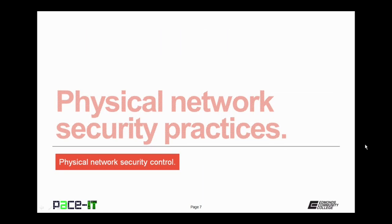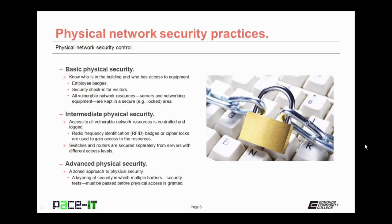With the why of physical network security out of the way, let's move on to physical network security practices. Basic physical security should include knowing who's in the building and who has access to equipment — you can do that through employee badges. Security check-in should be implemented for all visitors, and all vulnerable network resources such as servers and networking equipment should be kept in a secure area.